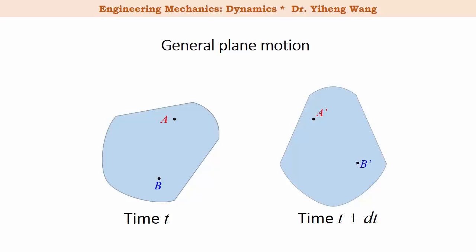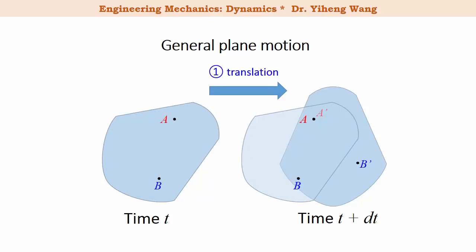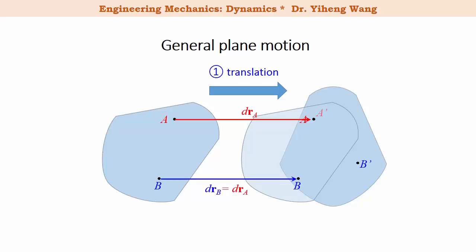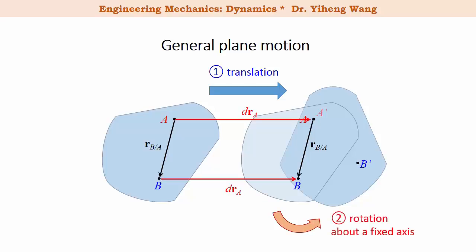Since general plane motion is the combination of translation and rotation, we can assume this motion happens in two steps. The first step is translation, during which point A moves to its new location. During translation, the displacement for all particles in this rigid body are the same, so the displacement of point B equals that of point A, and the relative position of B with respect to A stays the same. For the second step, the object rotates about a fixed axis perpendicular to the plane passing through point A, with angular velocity omega and angular acceleration alpha. This completes the general plane motion during time period dT.